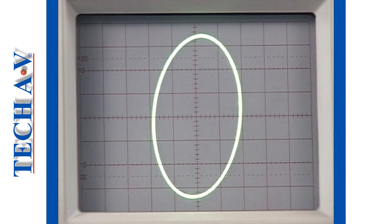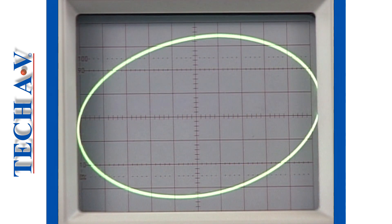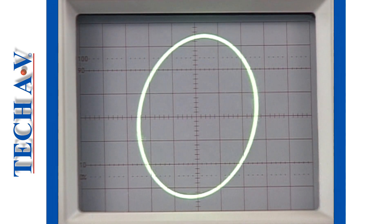A trace appears on the screen whose shape is dependent on the phase relationship between the two signals applied to the scope.